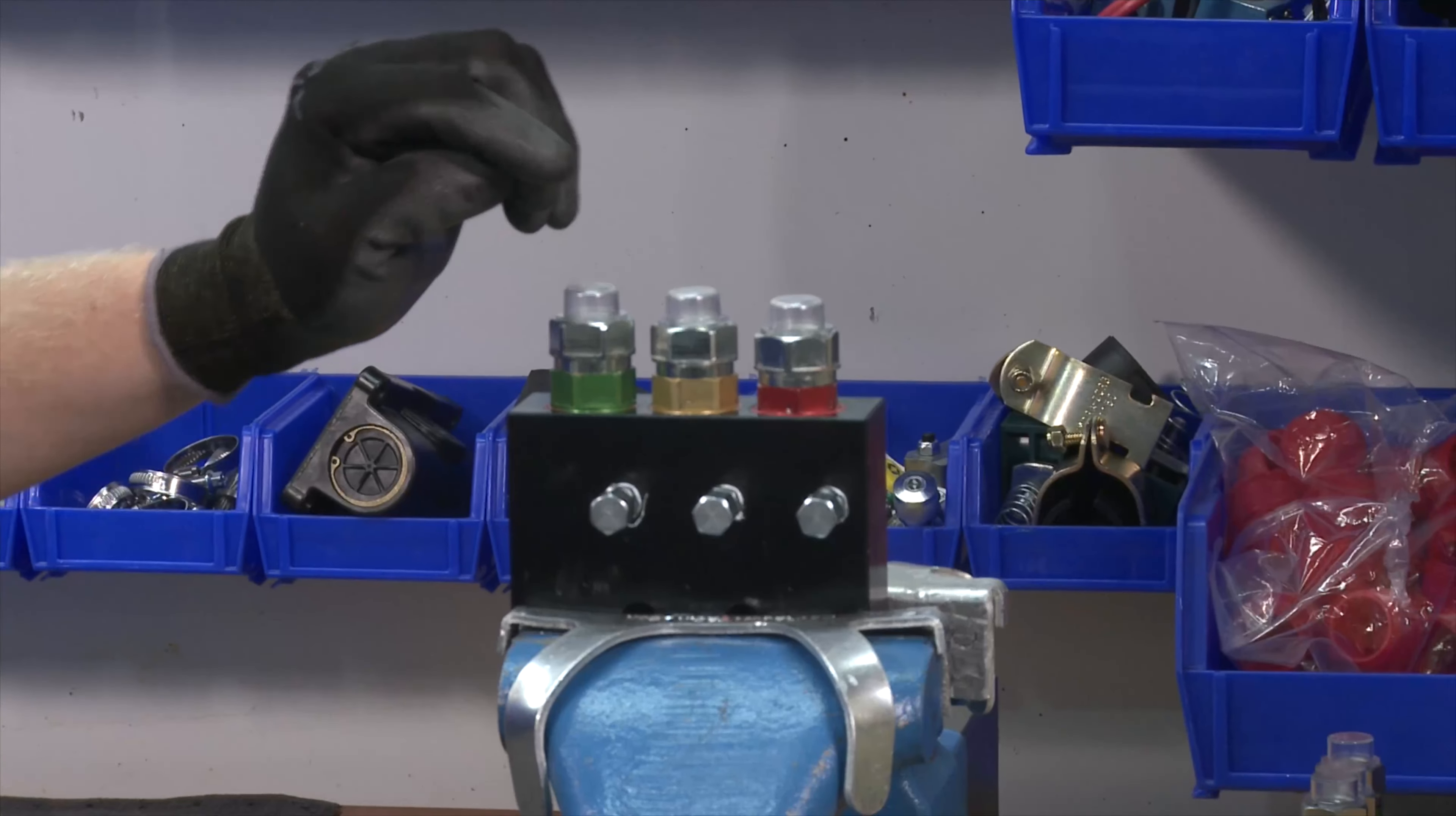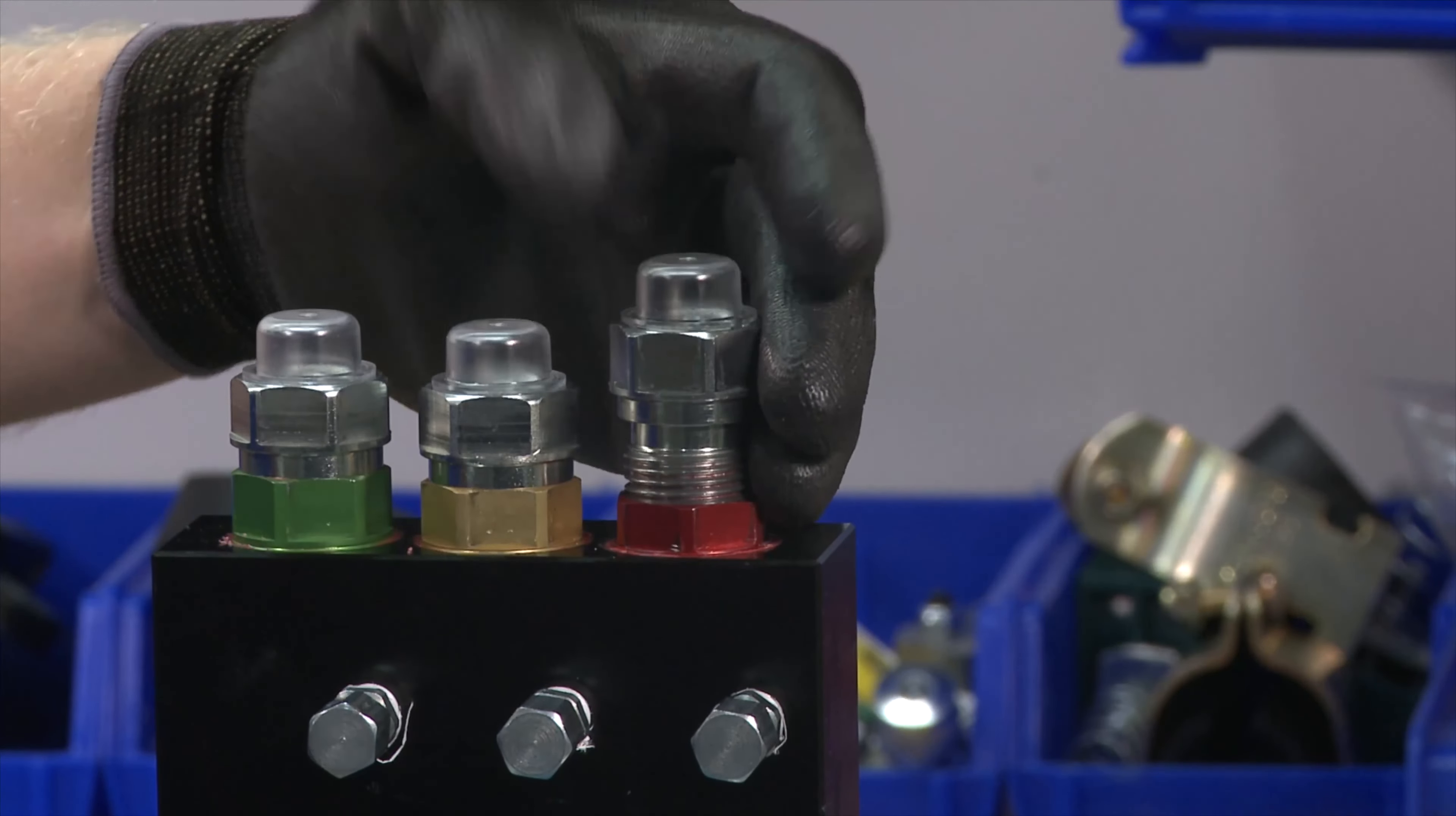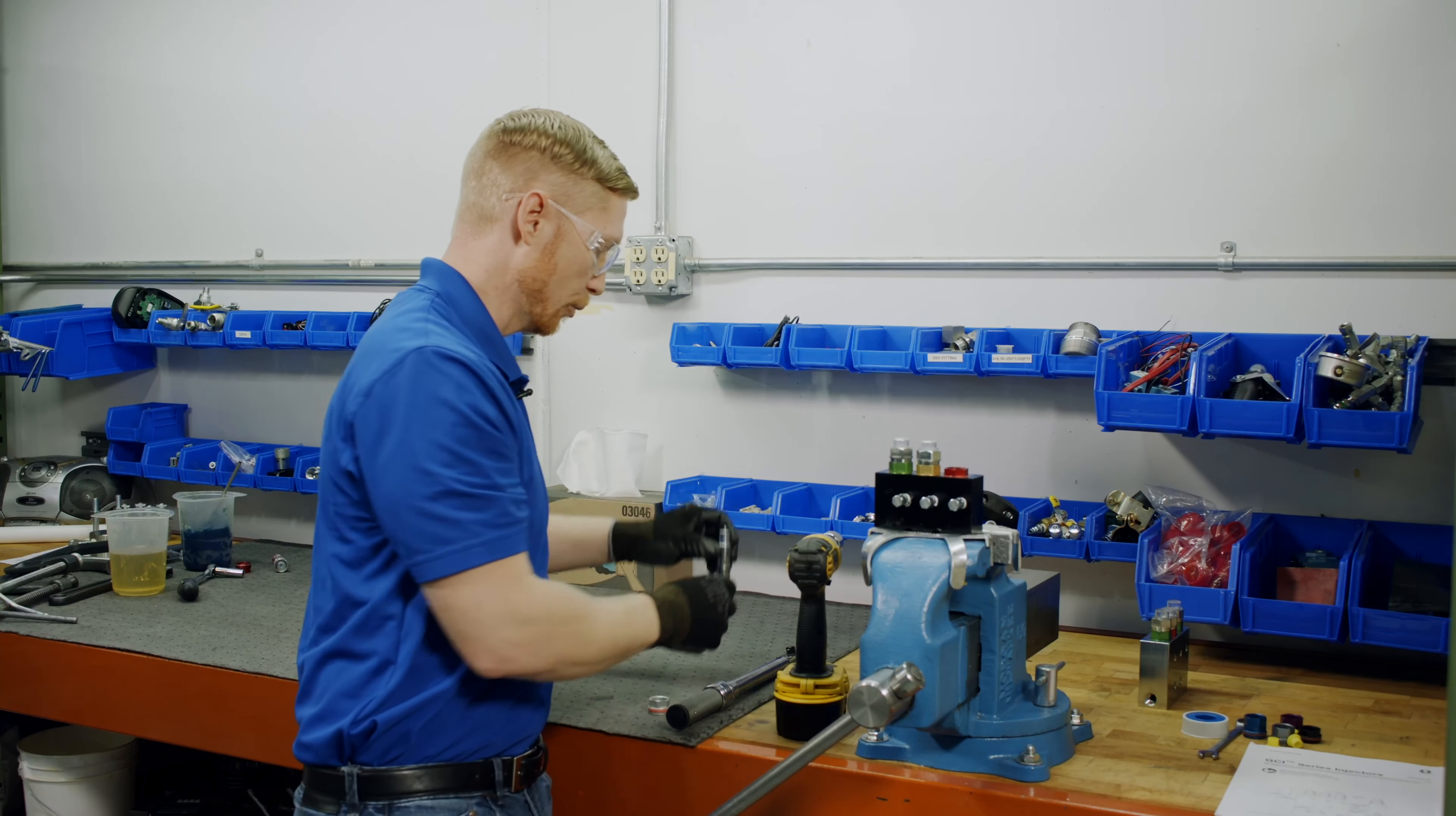So to start, we're first going to remove the cartridge. Pull that out. We're going to set that aside, so we're going to reuse the cartridge.